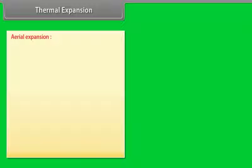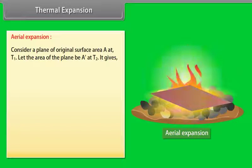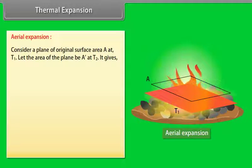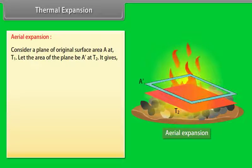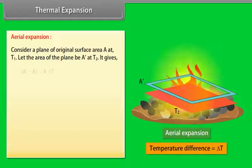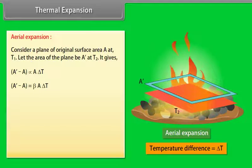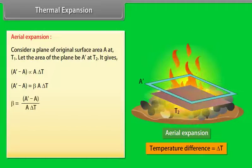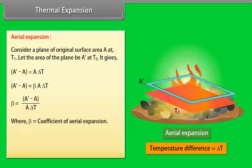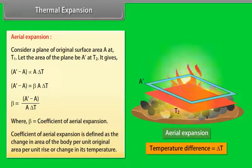Aerial expansion: Consider a plane with original surface area A at temperature T₁. Let the area be A' at temperature T₂. Then A' − A = βAΔT, and the coefficient of aerial expansion β = (A' − A)/(AΔT). It is defined as the change in area of a body per unit original area per unit rise in temperature.